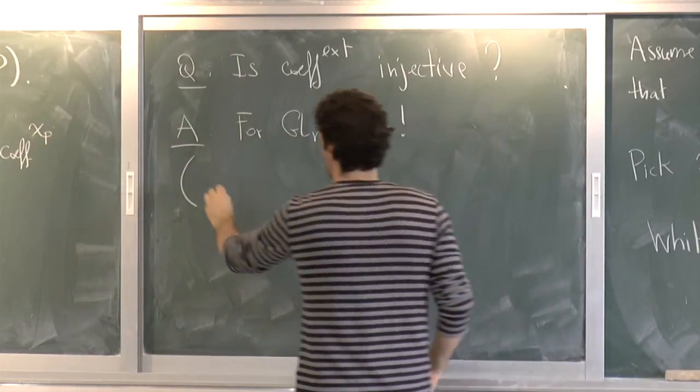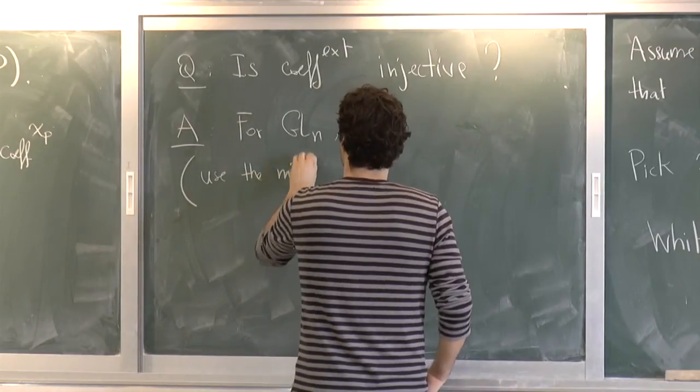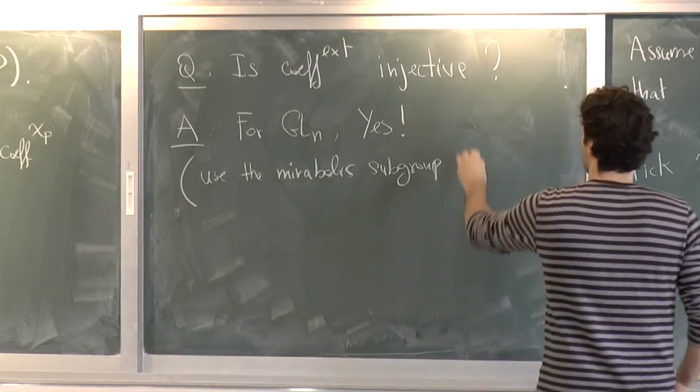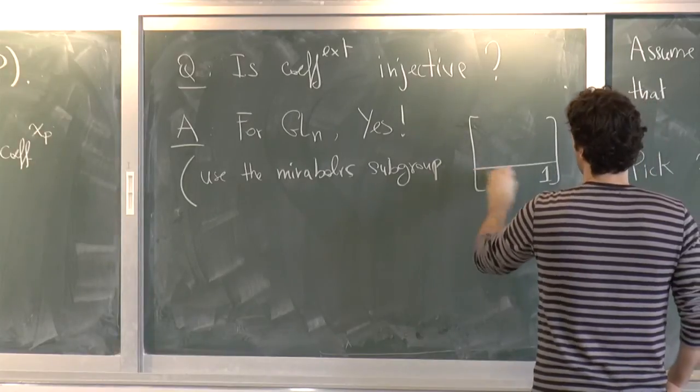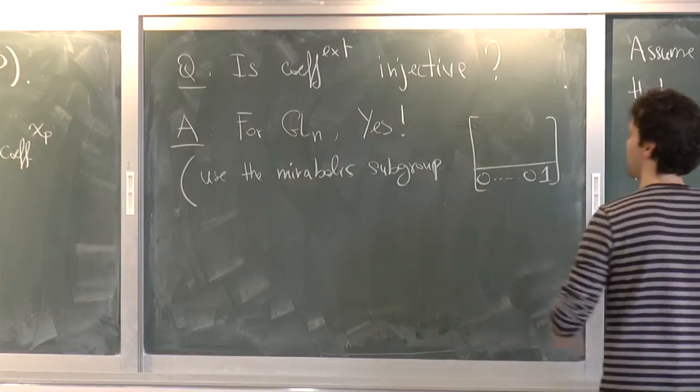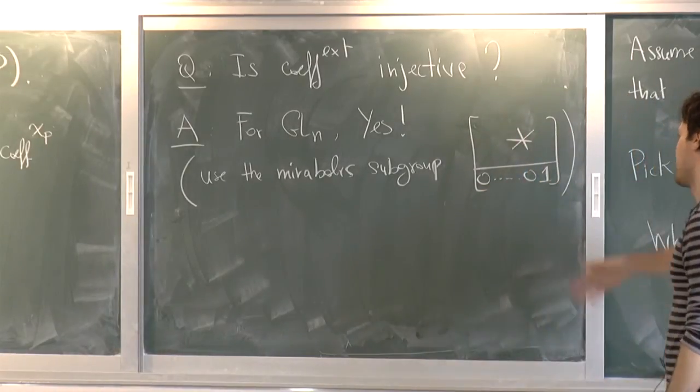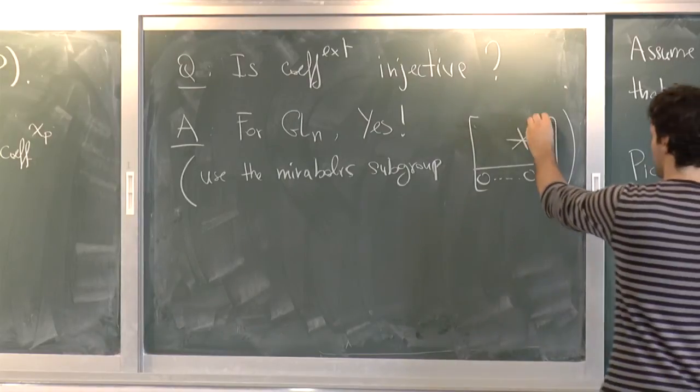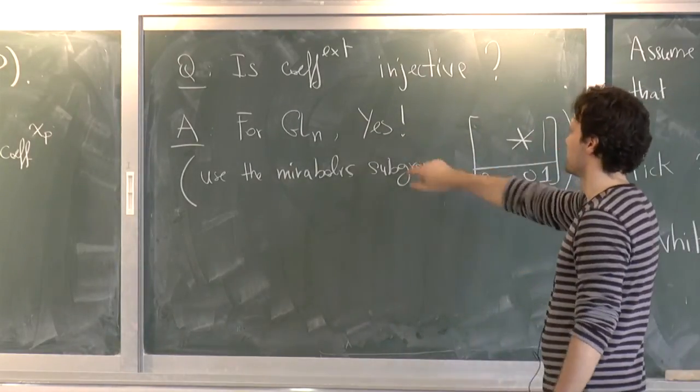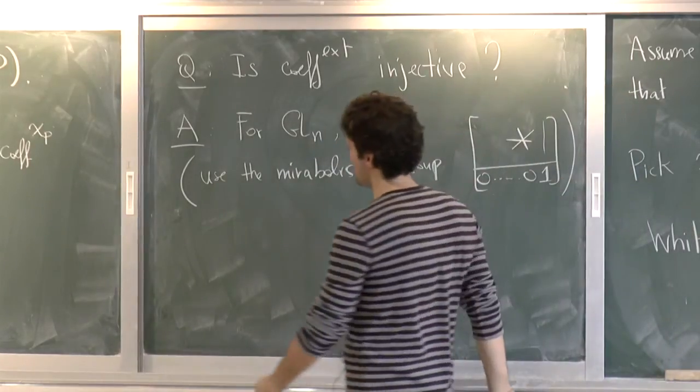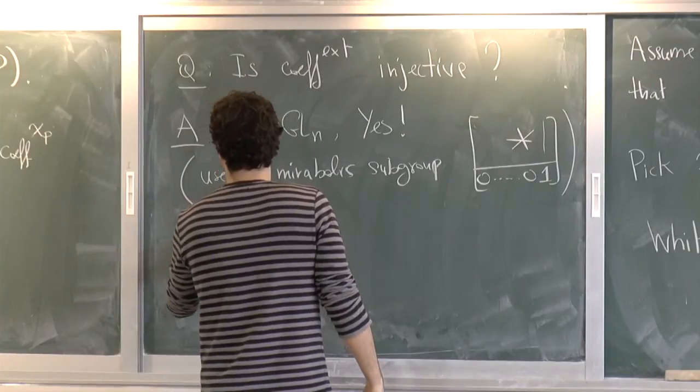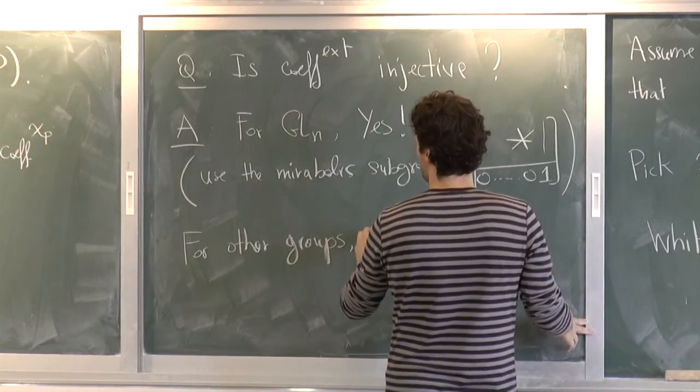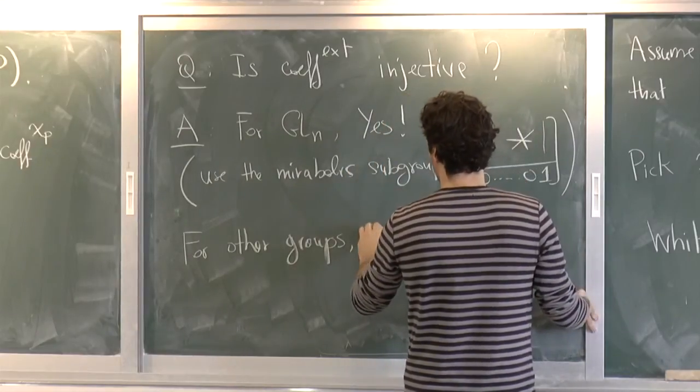You have this, what I call the partial Whittaker spaces. And then you have your automorphic functions. And here you have the extended coefficient functions operator. And here you have the products of the coefficients with respect to those characters belonging to this particular space. And you have a commutative triangle like that. That's where it is induced by restrictions. It commutes.